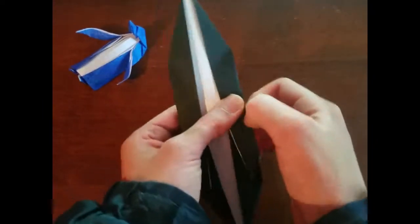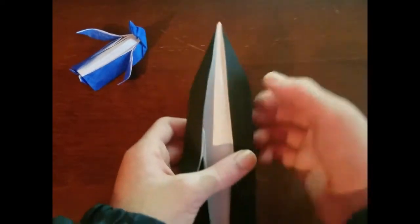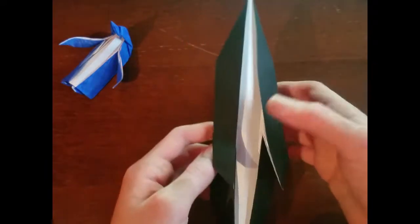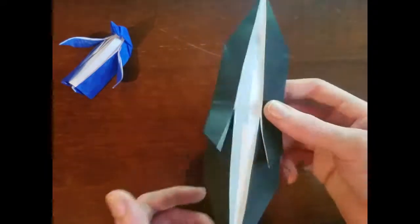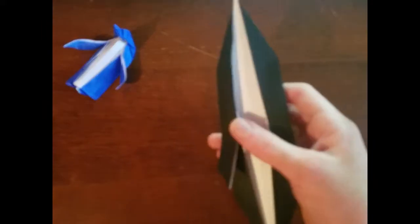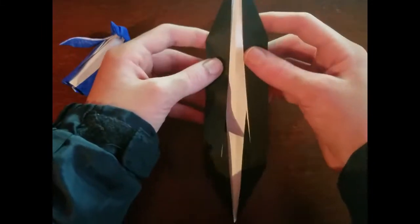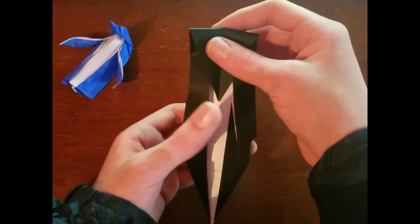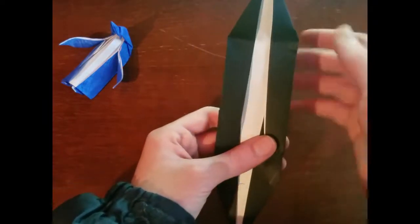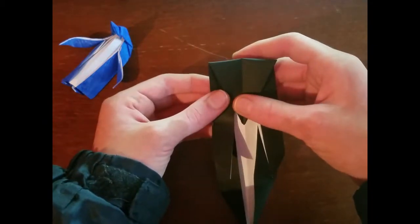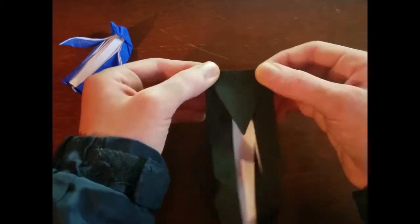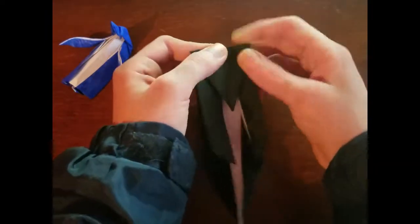There we go. Now crease everything out. Now this is going to be the part where the feet are going to be. This is going to be the beak. Now this is where things start to get no reference points. Because it's kind of like shaping. What we're going to do is fold this down.